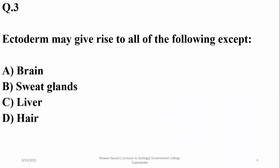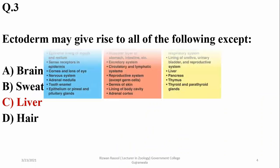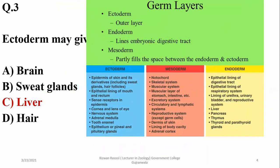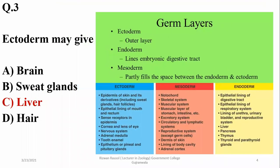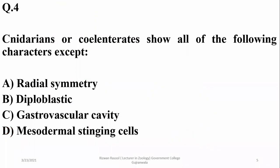Question three: ectoderm may give rise to all of the following except the liver, because the liver is an endodermal structure. The other structures on the list are ectodermal.